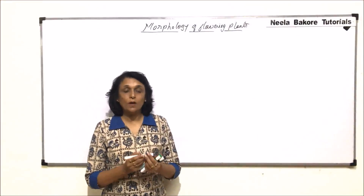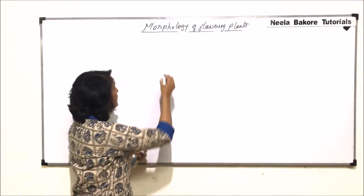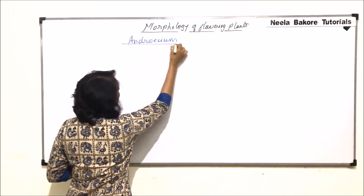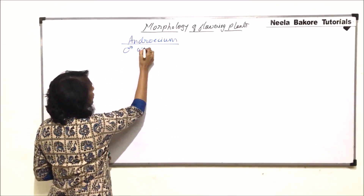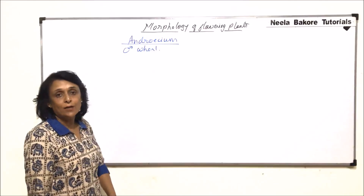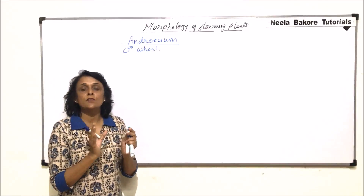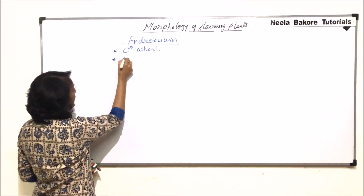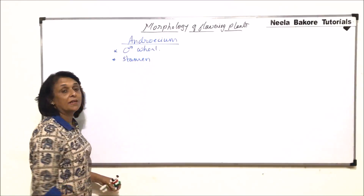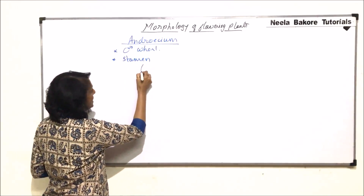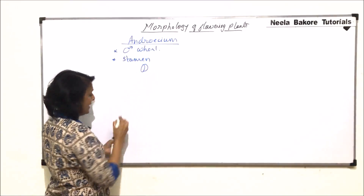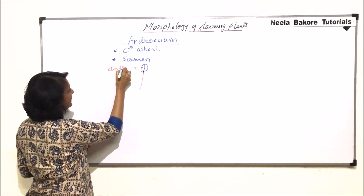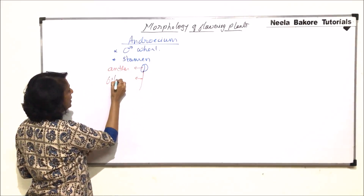We are going to discuss the third whorl now, that is the androecium. Androecium is the third whorl and it is the male world. Each androecium — or androecium is the name given to the male whorl — and the single member is known as a stamen. Each stamen has two parts: there is a swollen part and then there is a thread-like structure.